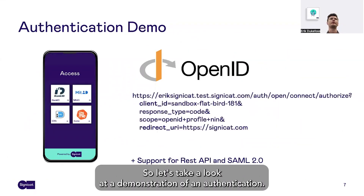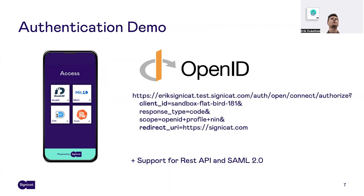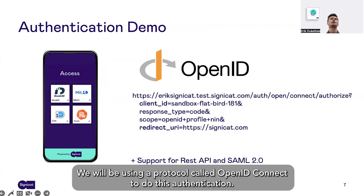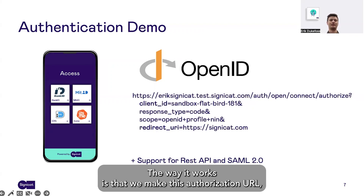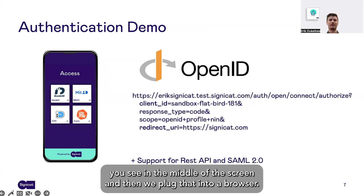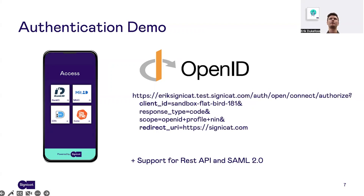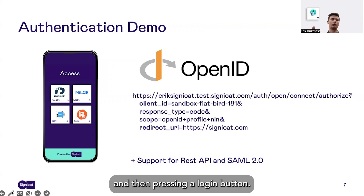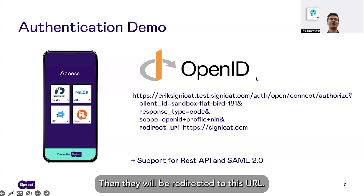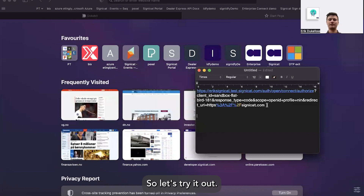Let's take a look at a demonstration of an authentication. We will be using a protocol called OpenID Connect to do this authentication. The way it works is that we make this authorization URL you see in the middle of the screen, and then we plug that into a browser. You can imagine an end user going to your website or your app and then pressing a login button. Then they will be redirected to this URL. So let's try it out.